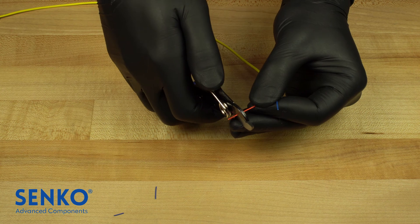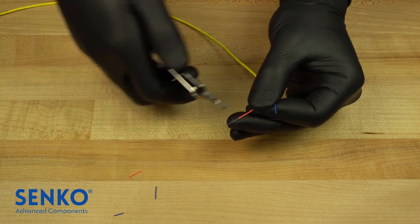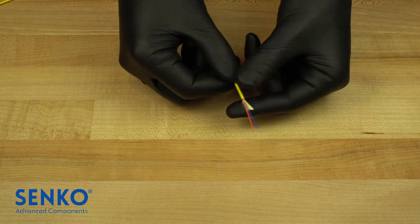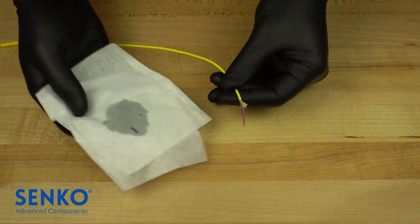It is also recommended to strip the fibers in increments so that they do not break. If there is a 250 micron coating left on the fiber after stripping the buffer, strip that as well.